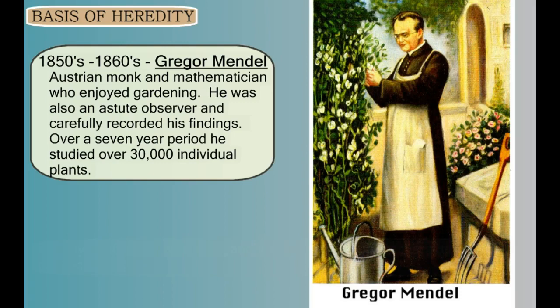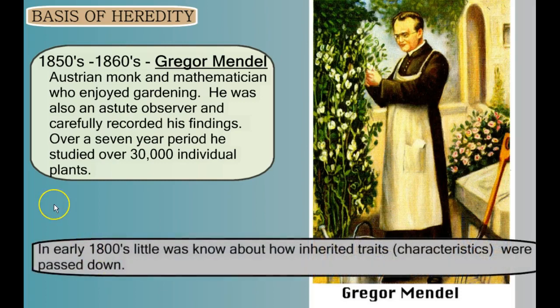With a background in mathematics and a penchant for gardening, Mendel meticulously studied over 30,000 individual pea plants over a seven-year period — makes you wonder what else there was to do as a 19th-century monk. These observations became the basis for how we understand modern genetics and accurately predicted the presence and mechanism of transfer of genes long before the physical nature of DNA had been determined.